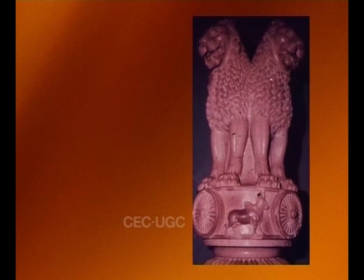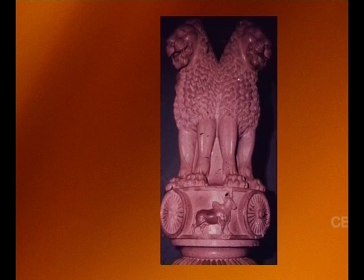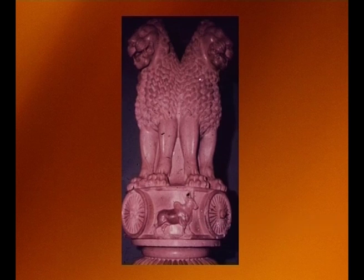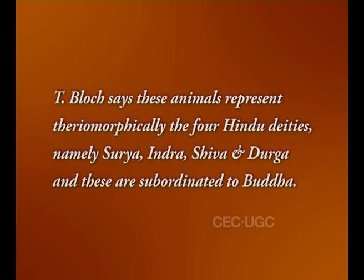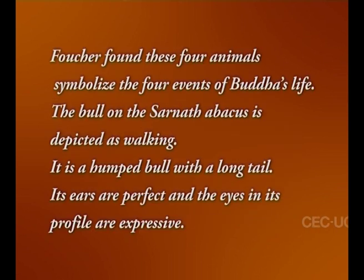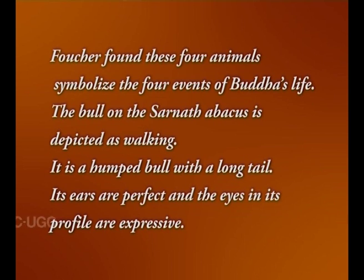The famous lion capital from Sarnath is known for its abacus, which is adorned with the lion, an elephant, a bull, and a horse. Tifloach says these animals represent theromorphically the four Hindu deities, namely Surya, Indra, Shiva, and Durga, and these are subordinated to Buddha. Foster found these four animals symbolize the four events of Buddha's life. The bull on the Sarnath abacus is depicted as walking. It is humped with a long tail. Its ears are perfect and the eyes in profile are perfect.